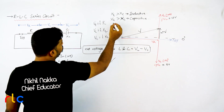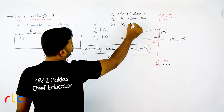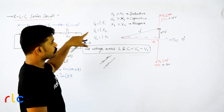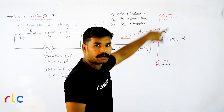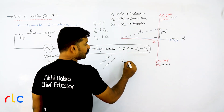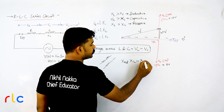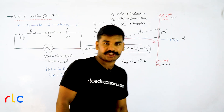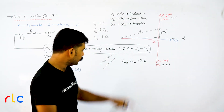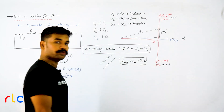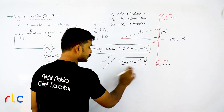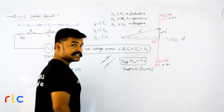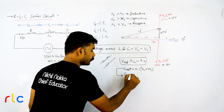If XL equals XC, the net reactance is zero and it is a resistive nature circuit — current and voltage are in phase. This condition is called series resonance. The net reactance XL − XC equals zero when XL equals XC, and the only opposing quantity remaining is resistance.